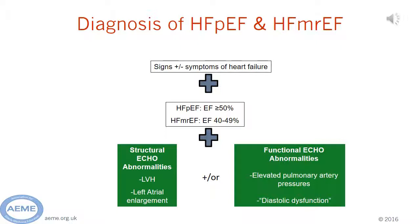Structural echo abnormalities include left ventricular hypertrophy, leading to stiffness, and left atrial enlargement. Functional echo abnormalities you might see could be elevated pulmonary artery pressures or specific Doppler markers of diastolic dysfunction, which would be reported on the bottom of their echo report.